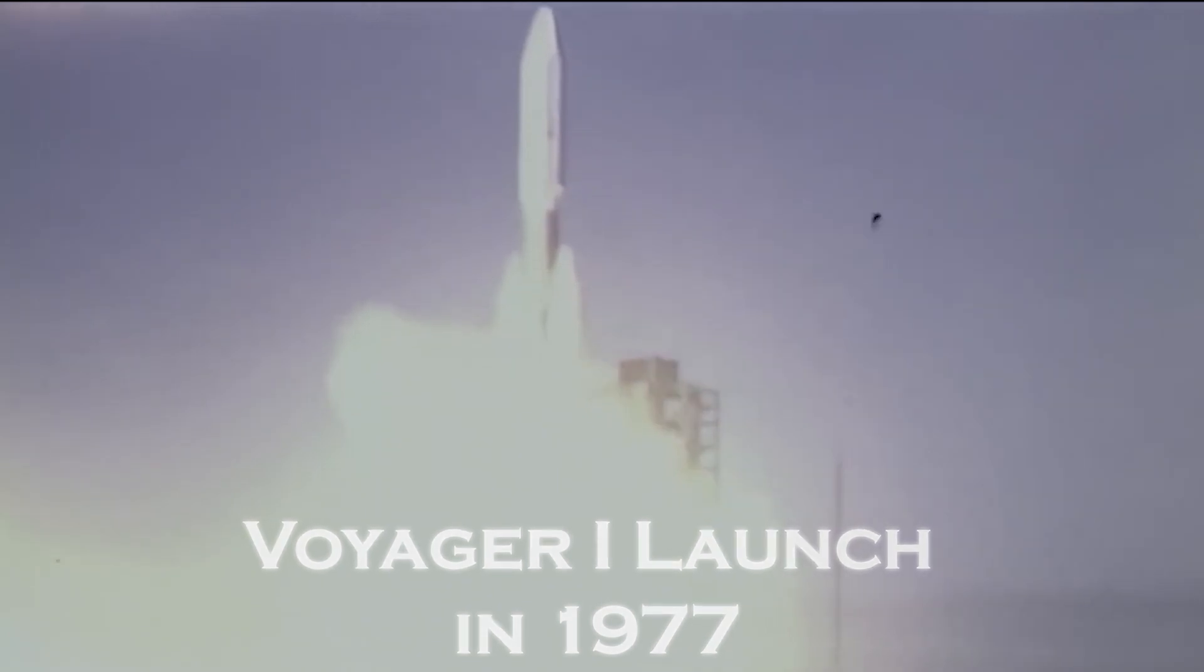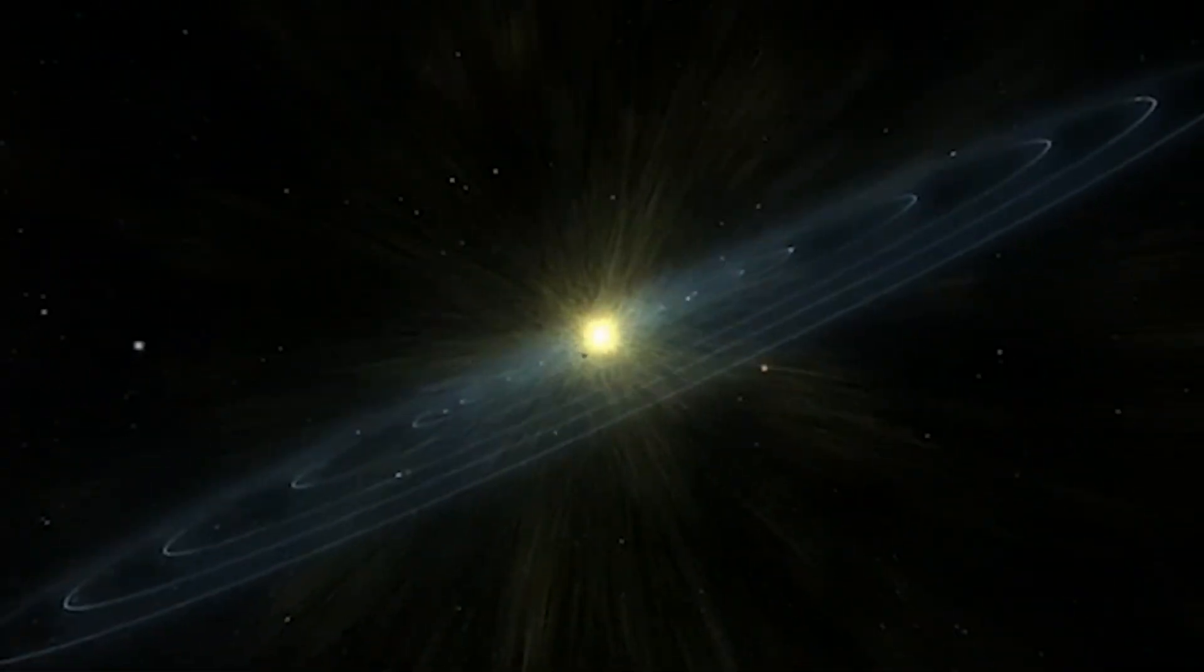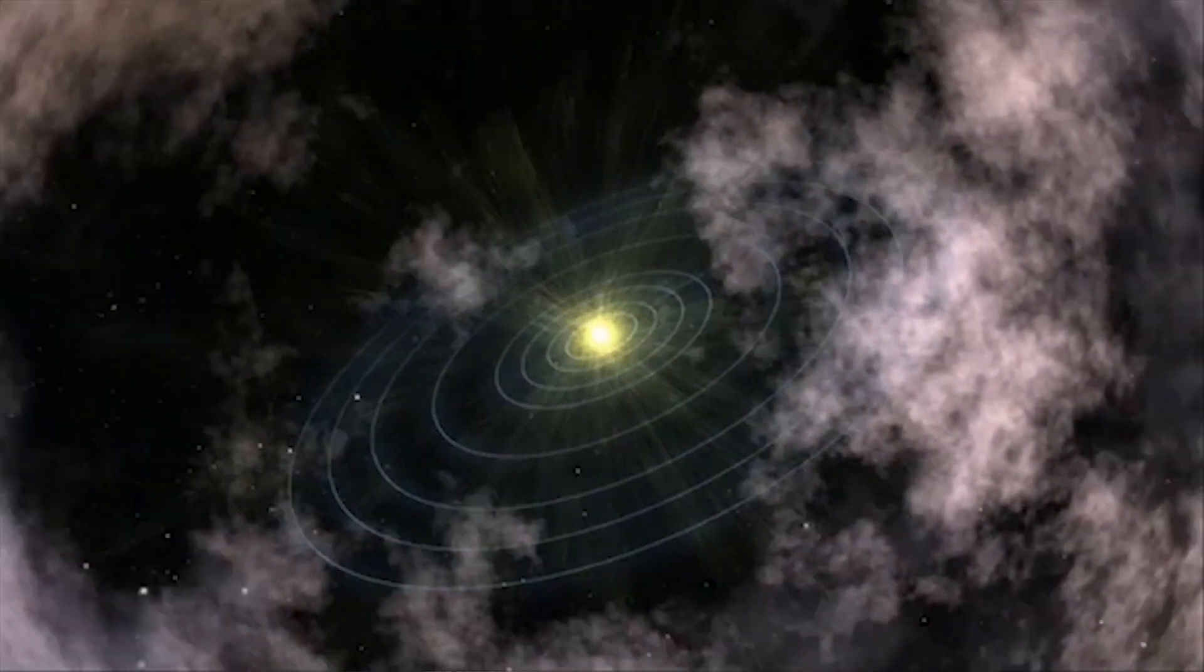Launched in 1977, Voyager 1 had a clear mission: to explore the outermost planets of our solar system, collect data, and one day perhaps cross that invisible boundary that separates our solar system from interstellar space.